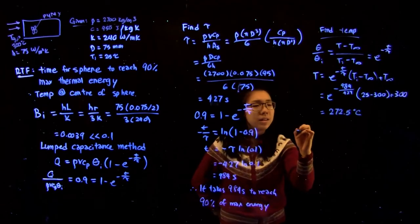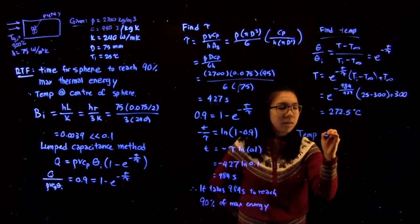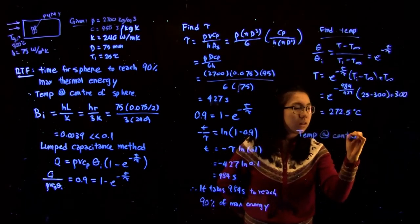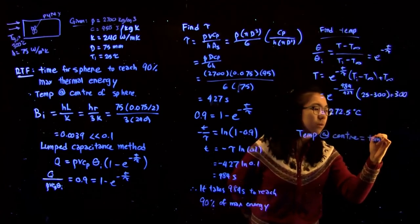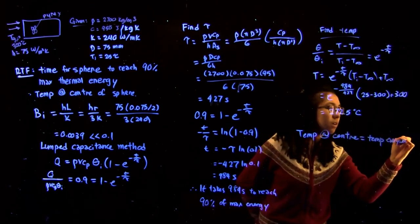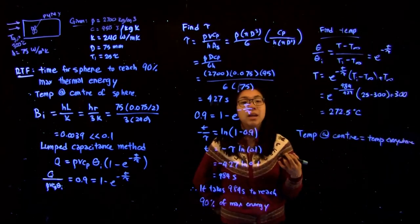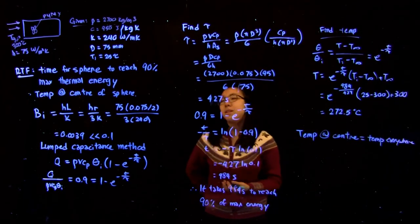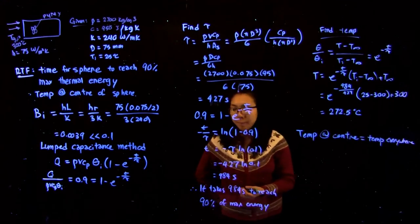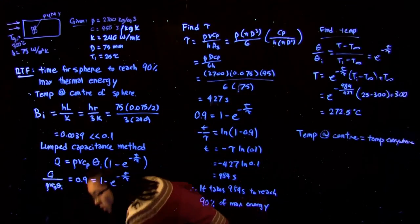And we're saying the temperature at the center equals the temperature everywhere, because we applied the lumped capacitance method when we solved that the Biot number was less than 0.1.